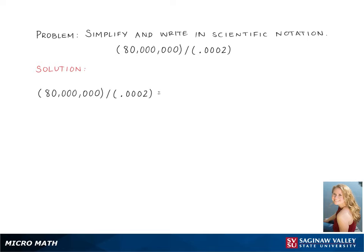Here we need to simplify and write the expression below in scientific notation: 80 million divided by 0.0002. Our first step is to write these two in scientific notation, giving us 8 times 10 to the 7th divided by 2 times 10 to the negative 4th.